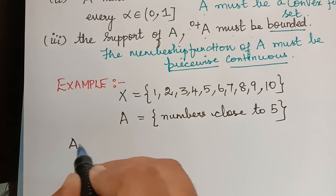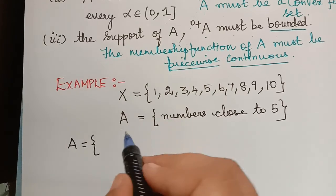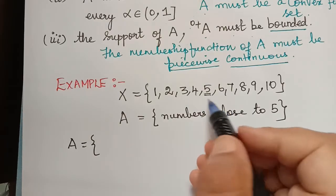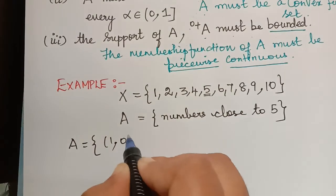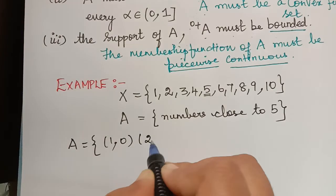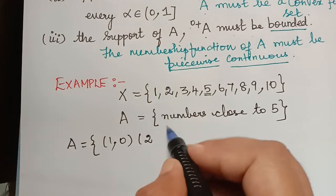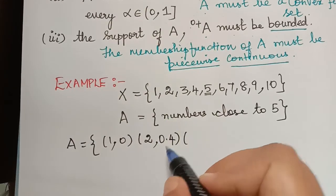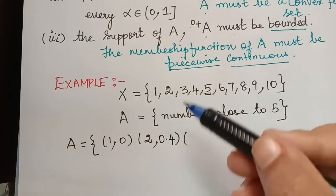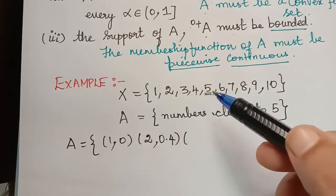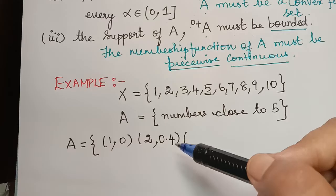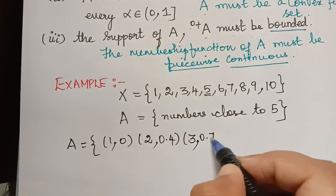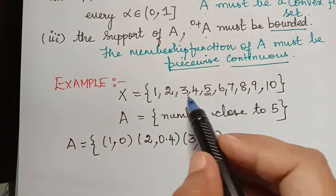Now, how will the elements of A be assigned? We have to give membership values. If you see, 1 is very far from 5, so we can take its membership value to be 0. The element 2 is a little better than 1, so I am taking its membership grade as 0.4. It depends on the persons who give the membership values, but it will not vary to a greater extent.